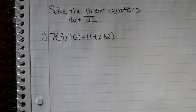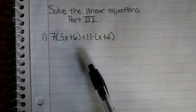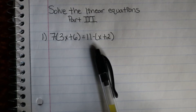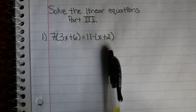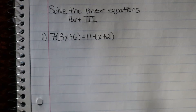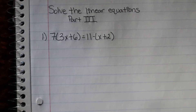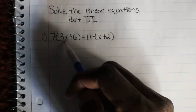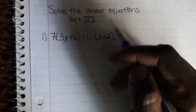So for our first question we have 7 parenthesis 3x plus 6, which equals 11 minus parenthesis x plus 2. How do we take care of this? Well first things first, we've got to figure out what are we solving for here? And it's obviously x.